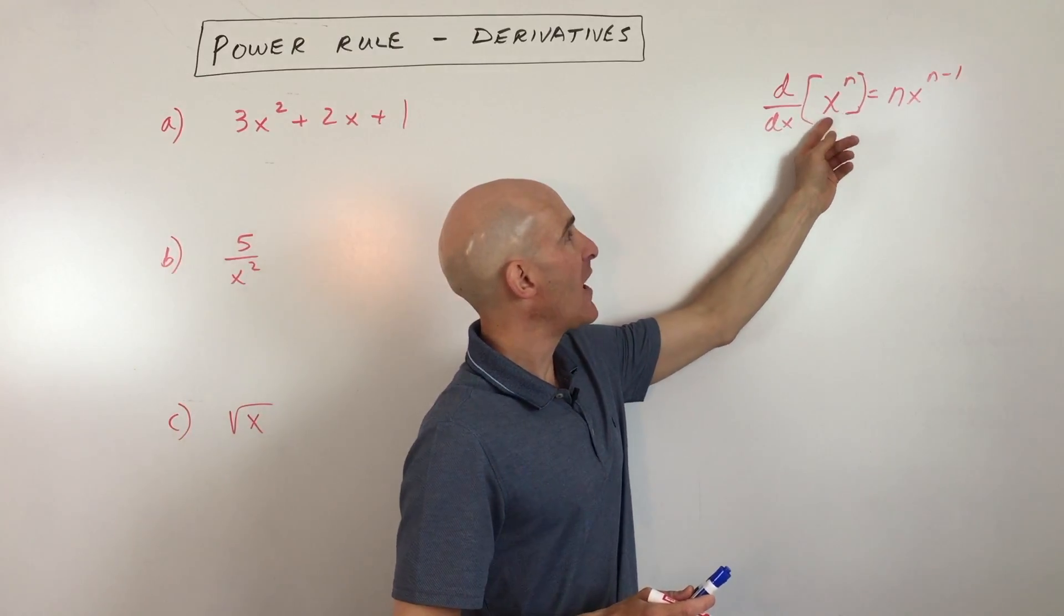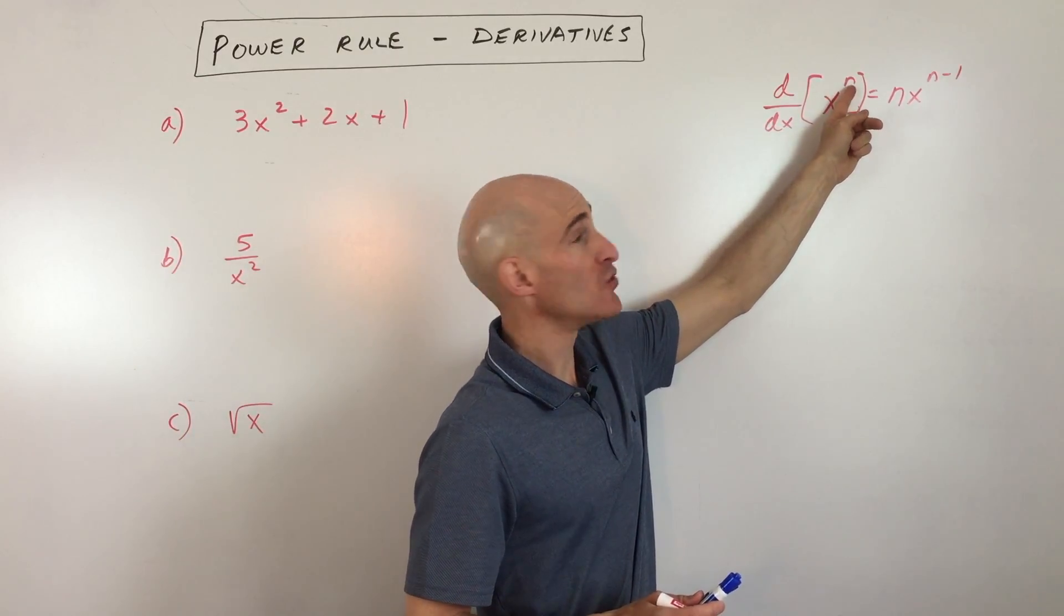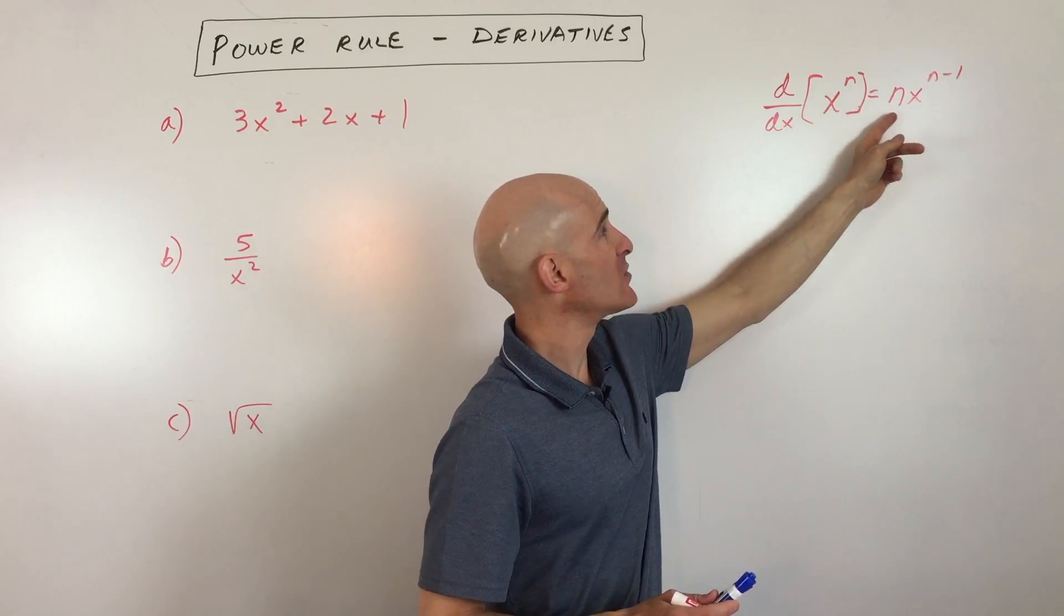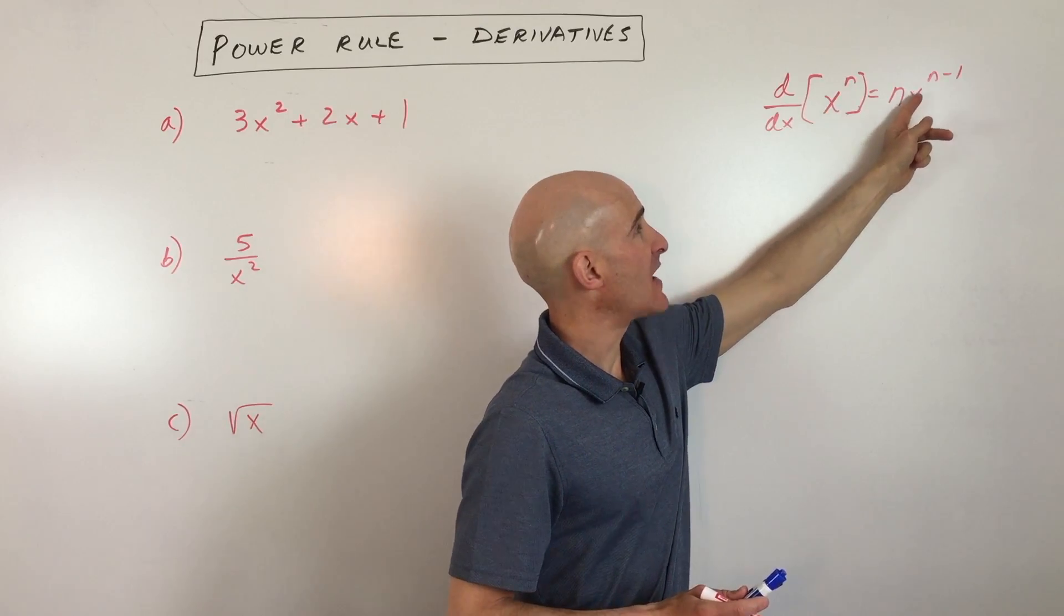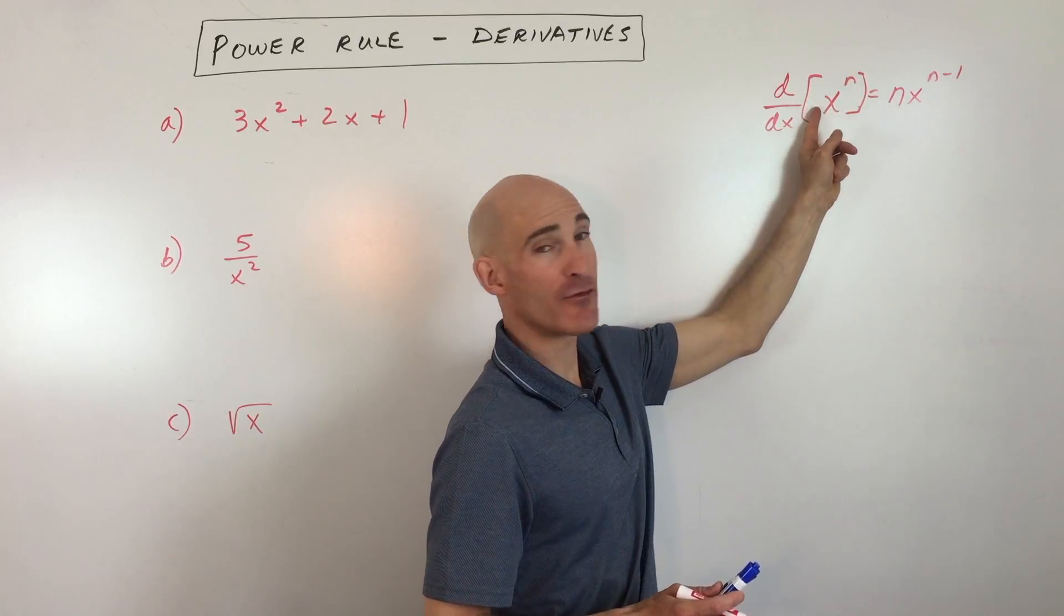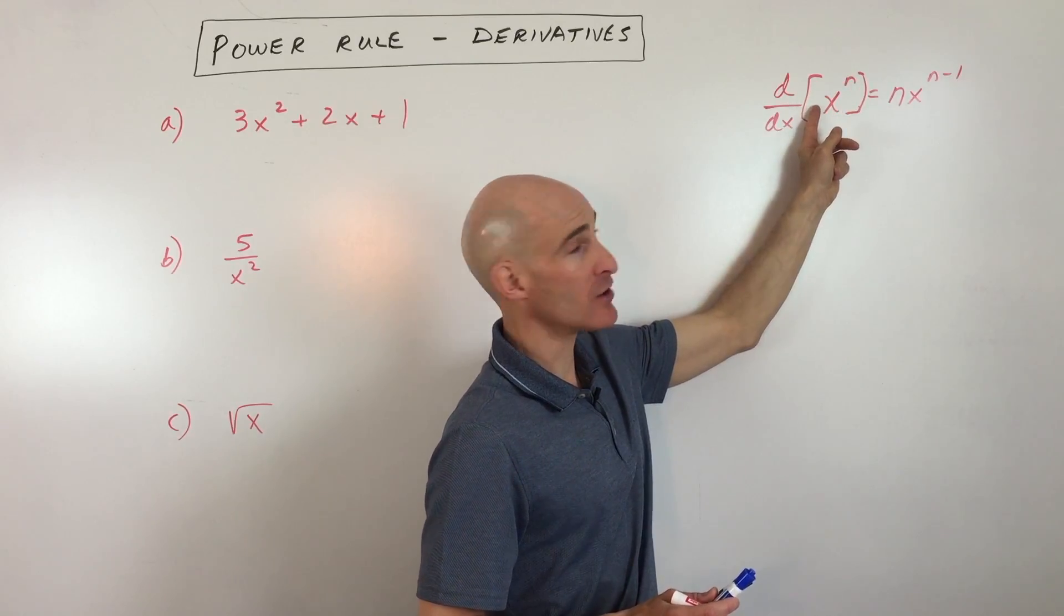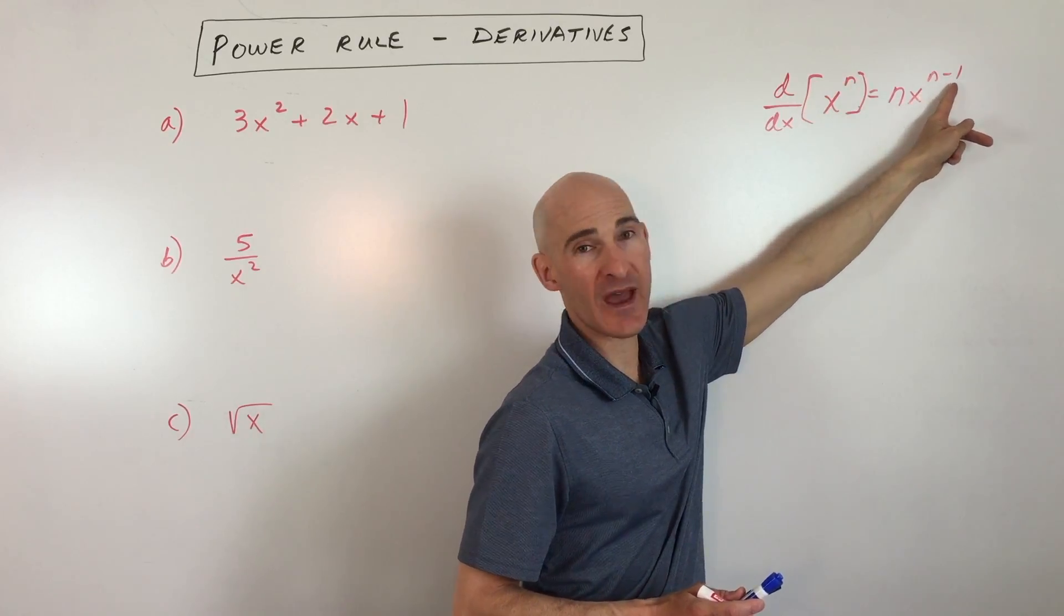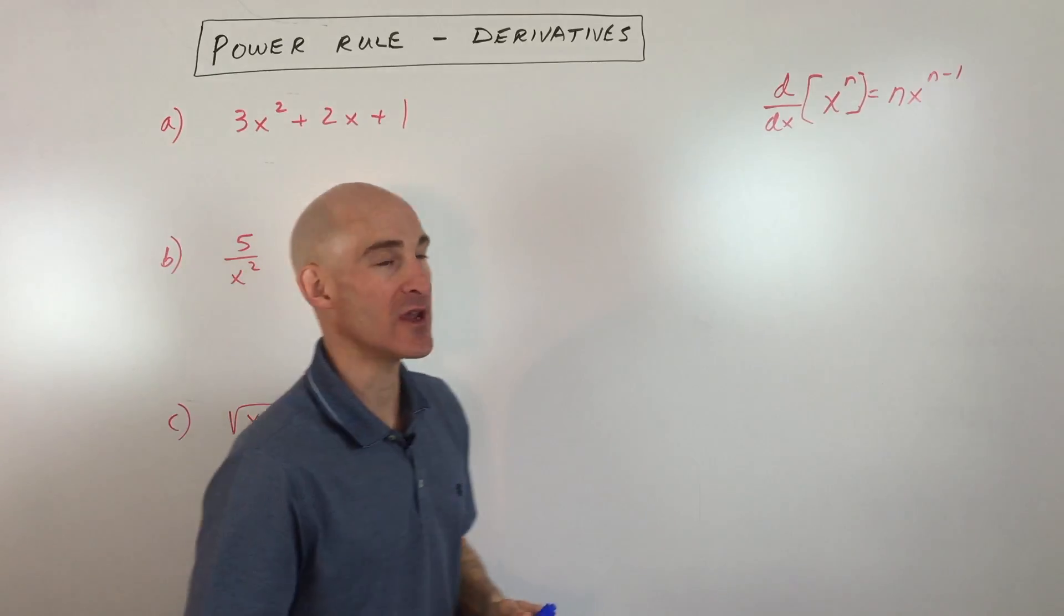See the formula over here? This is the derivative when you have a variable raised to a power. And you can see this is n times x to the n minus 1. What we do is we take this power, we bring it down in front of the base here, and we subtract 1 from the exponent. So it goes down by 1 degree.